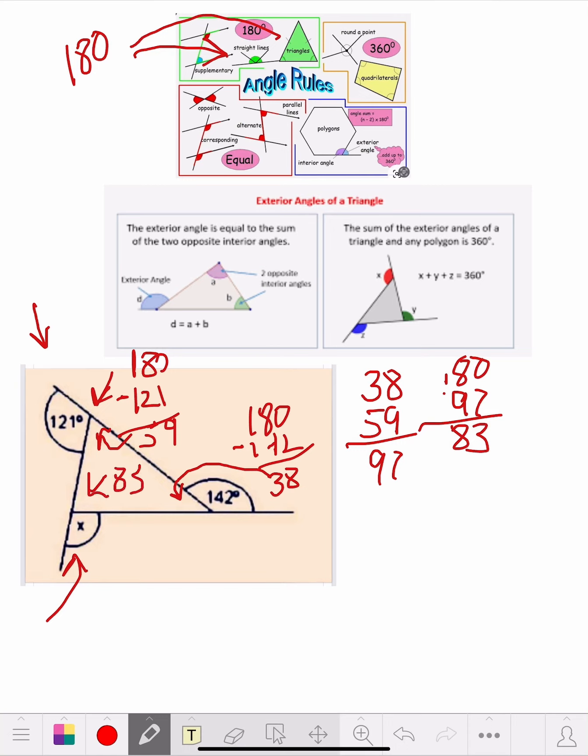Now, because of the straight line rule again, we know that's 180. So you take the 180, 180 minus 83. And we're going to come up with 97. So that means x is 97.